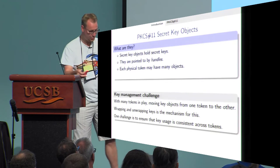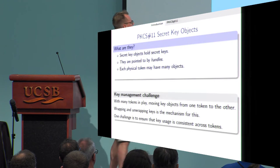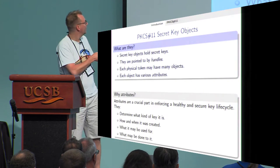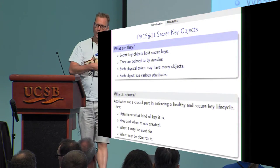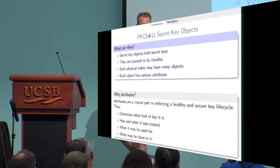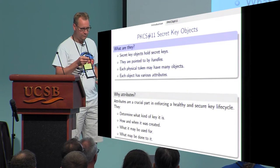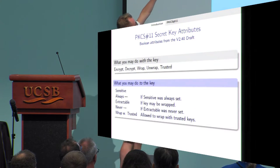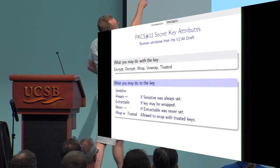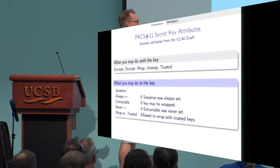To move keys across from one token to another, you use wrapping and unwrapping. To ensure consistent key usage, there's something called an attribute, which tells you what usage is allowed with the keys — what kind of key it is, how and when it was created, what it may be used for, and what may be done to it. Examples from the PKCS#11 standard include: encrypt, decrypt, wrap, unwrap, and trusted. There are also attributes for what you may do to the key — for instance, an extractable key may be wrapped, whereas a non-extractable key should not be wrapped.